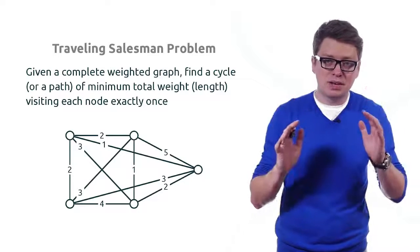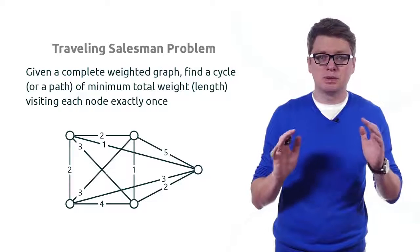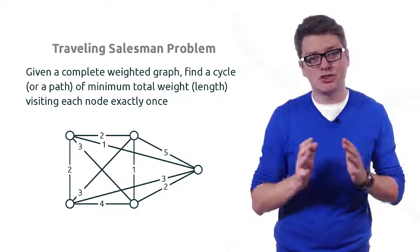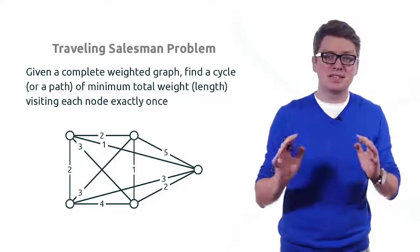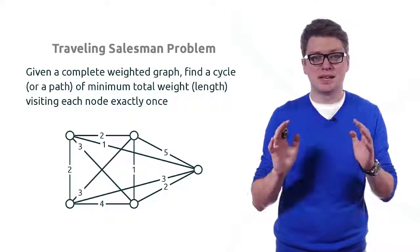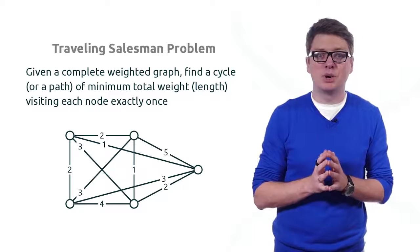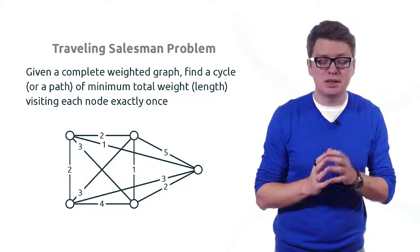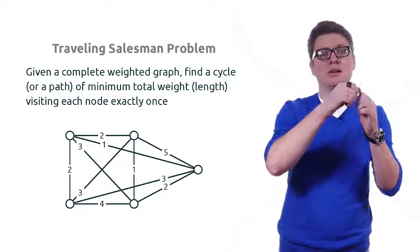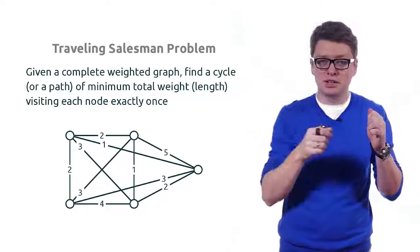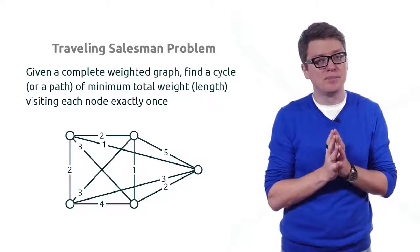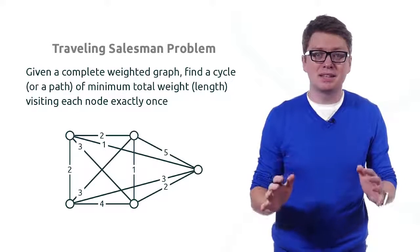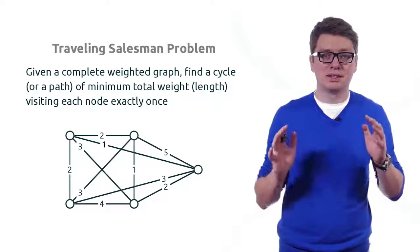It is formally known as the traveling salesman problem, and the name comes from the following natural application. Imagine n cities and a traveling salesperson in one of these cities. What he or she would like to do is to visit all n cities and return back to the initial city, minimizing the total traveling length.